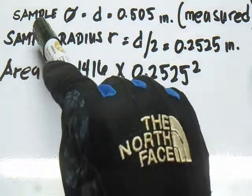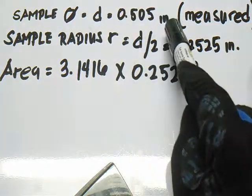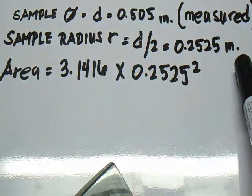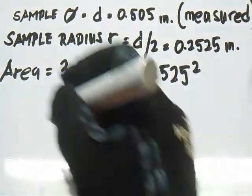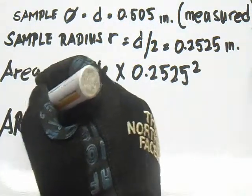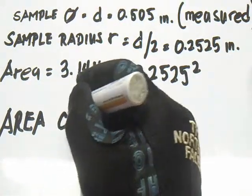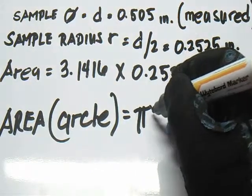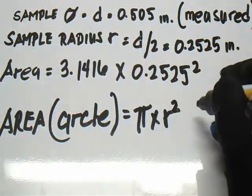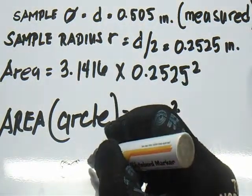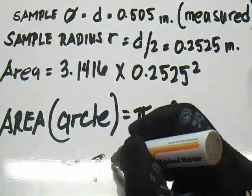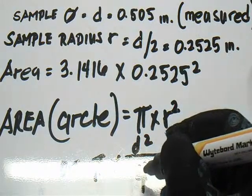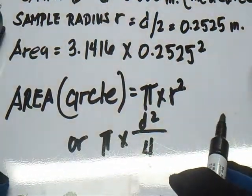We have a sample here. Our diameter is 0.505 inch, and the radius is 0.2525 inch. Our formula for the area of a circle is pi times radius squared, or pi times d squared over 4. This is the formula.